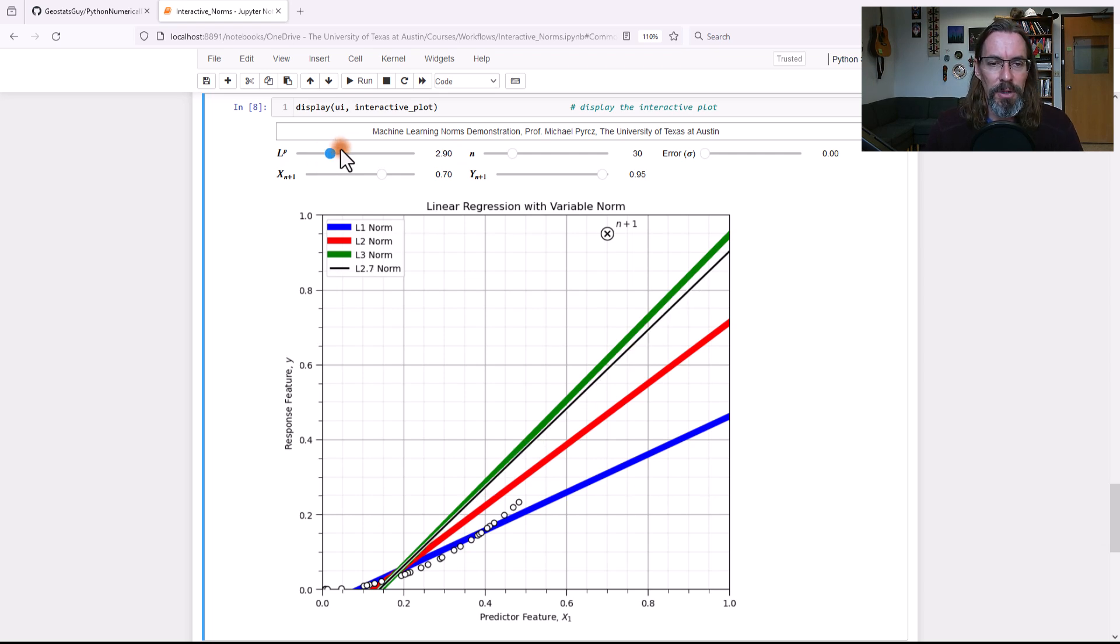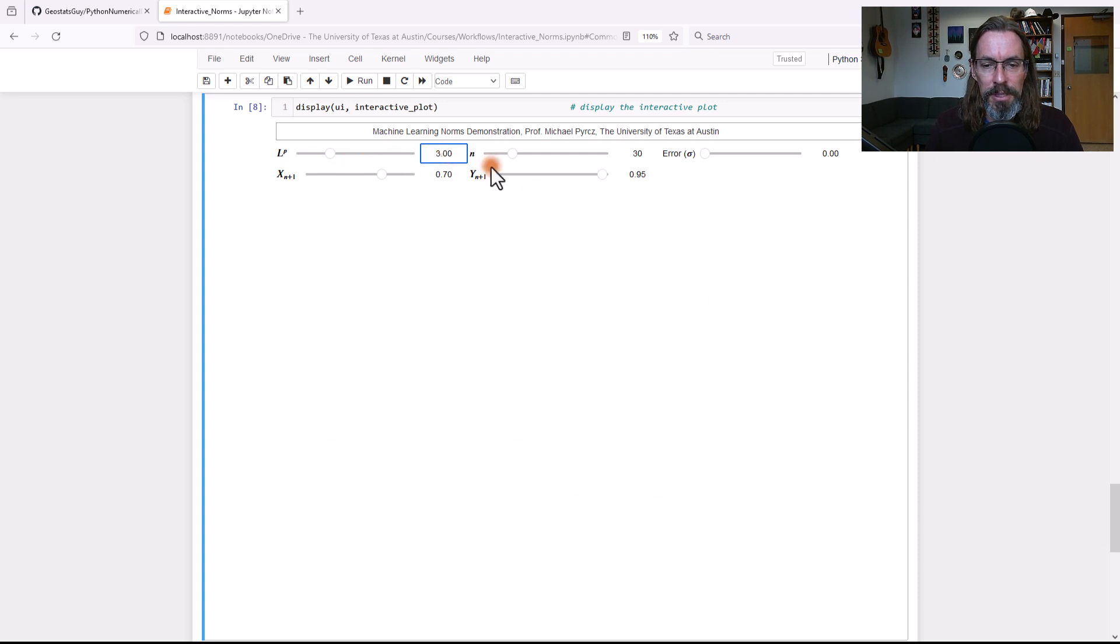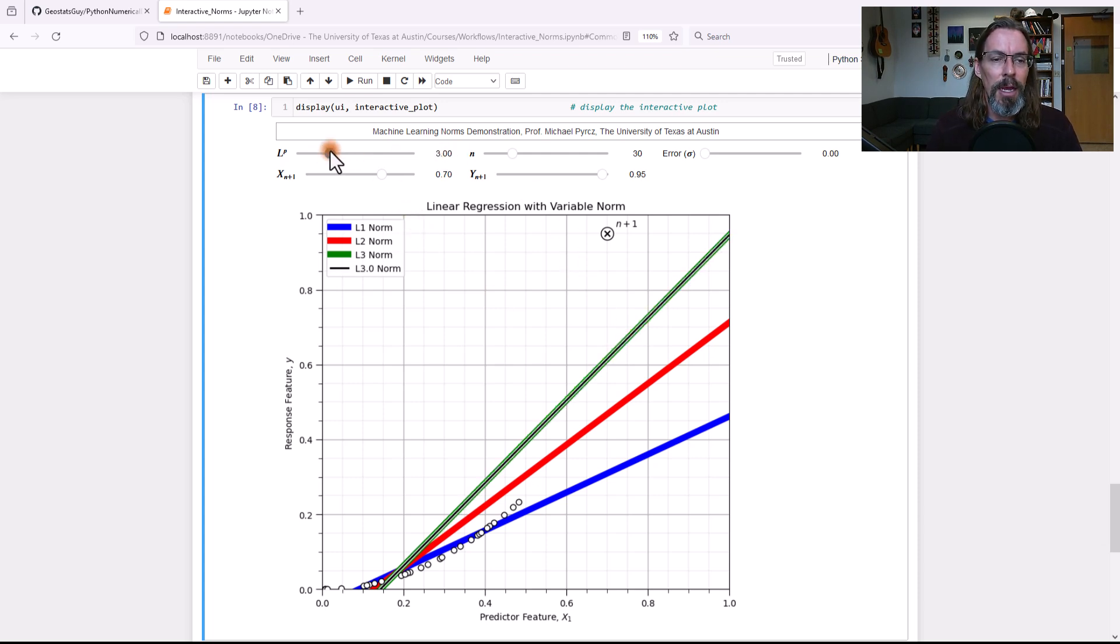And we can go ahead and force it to be 3.0. It's right on top of that line. And of course, we can keep changing this norm. Keep increasing it. We increase the sensitivity to that one outlier.